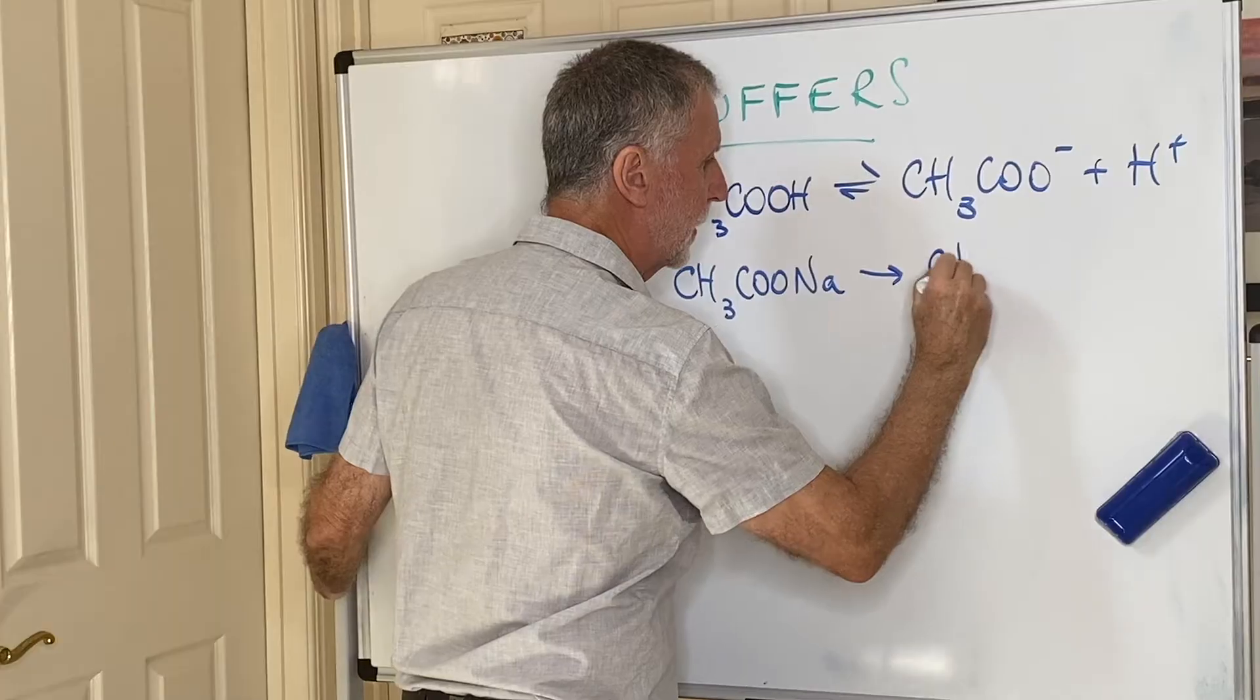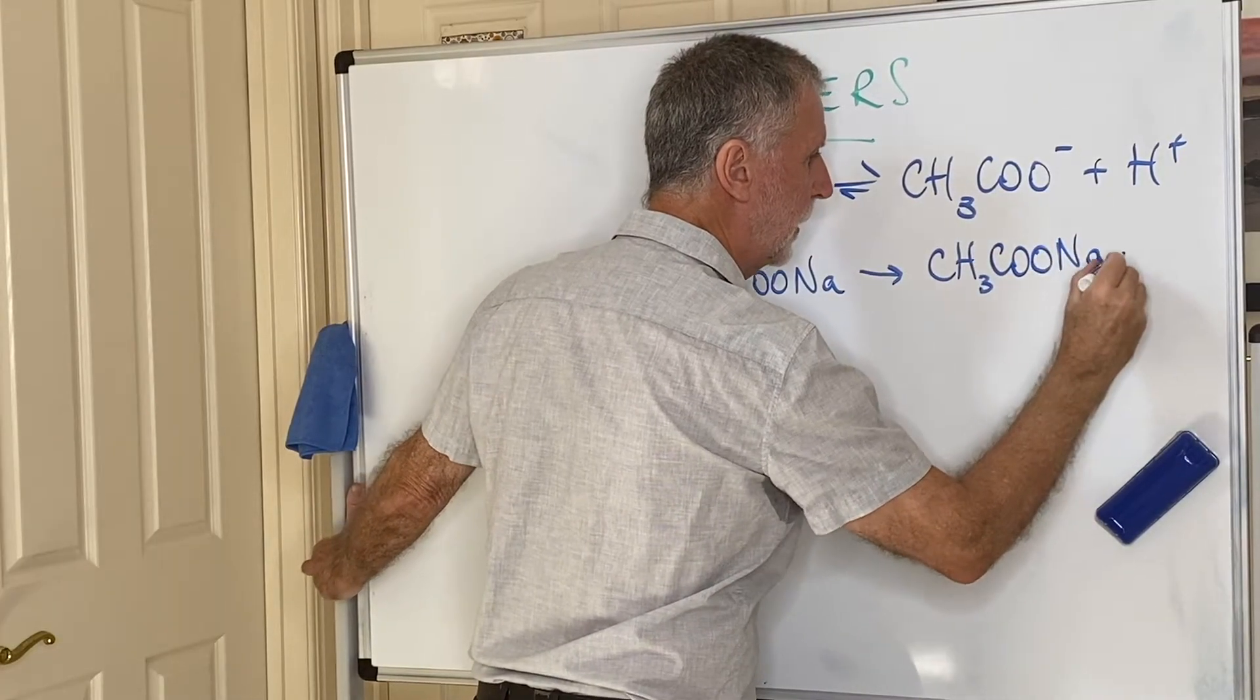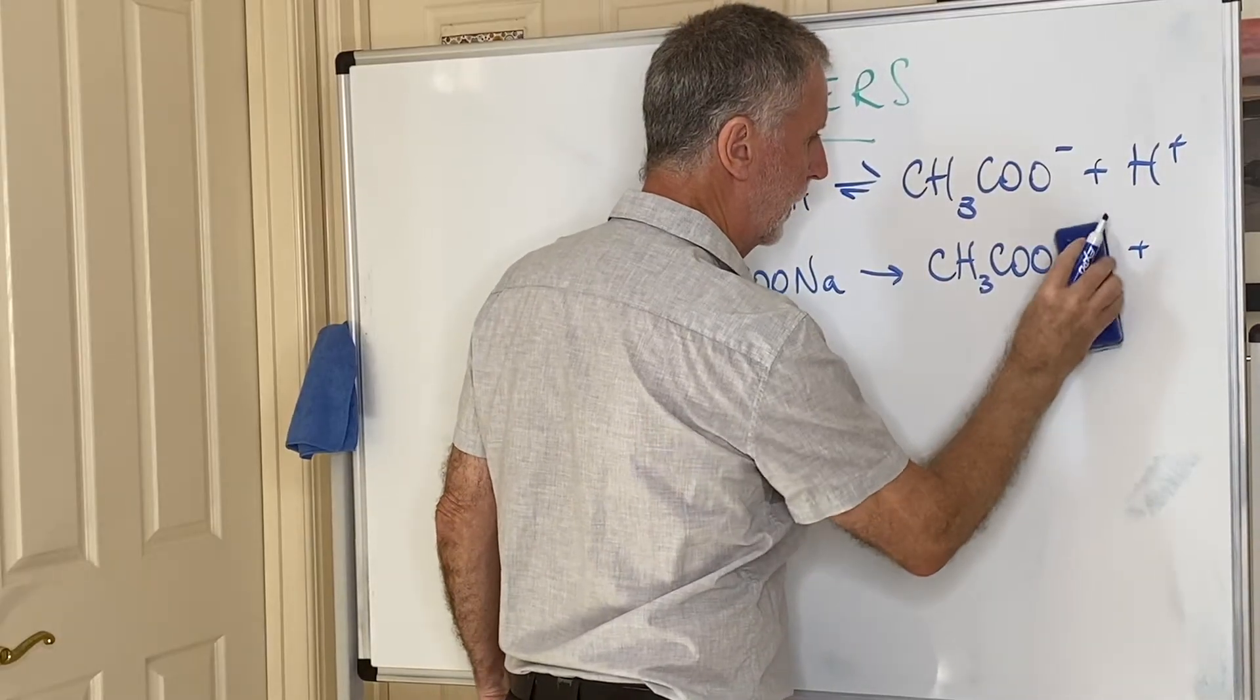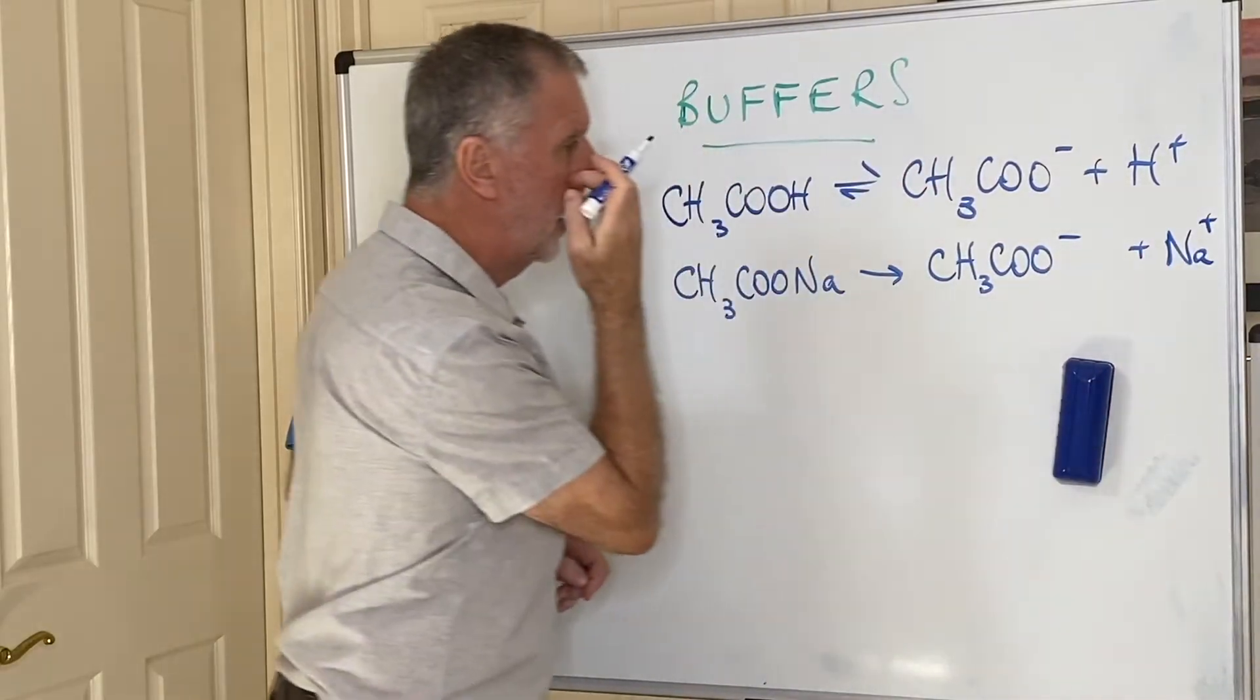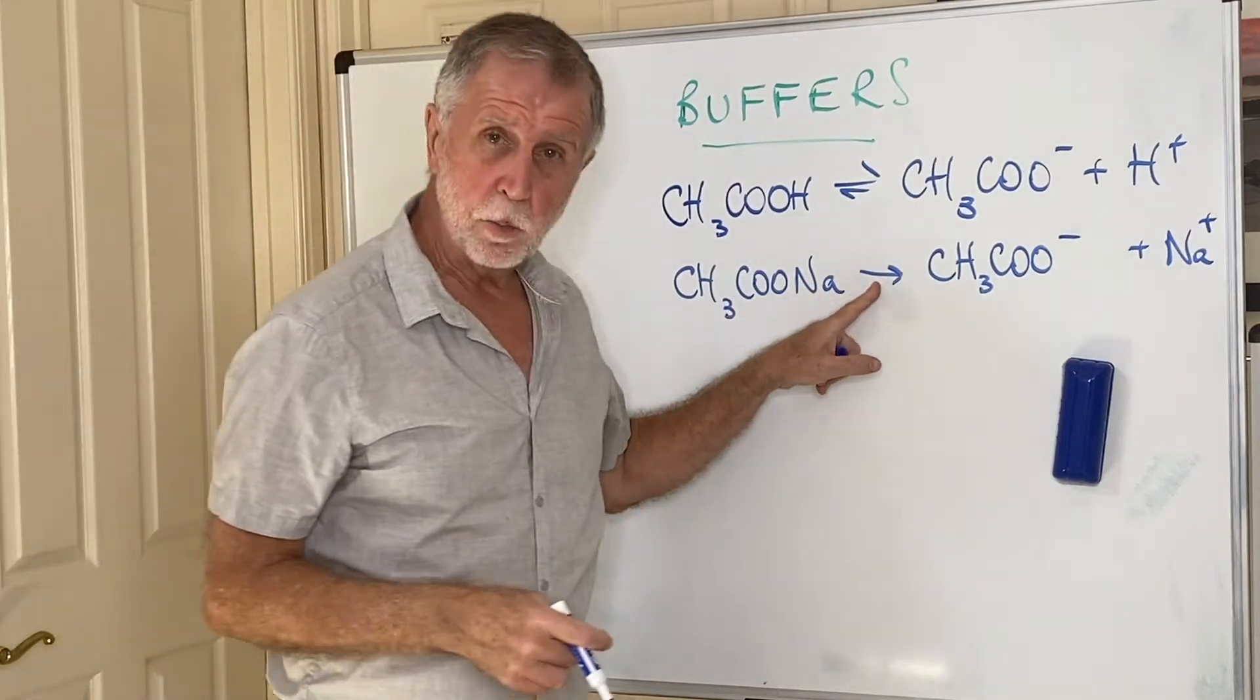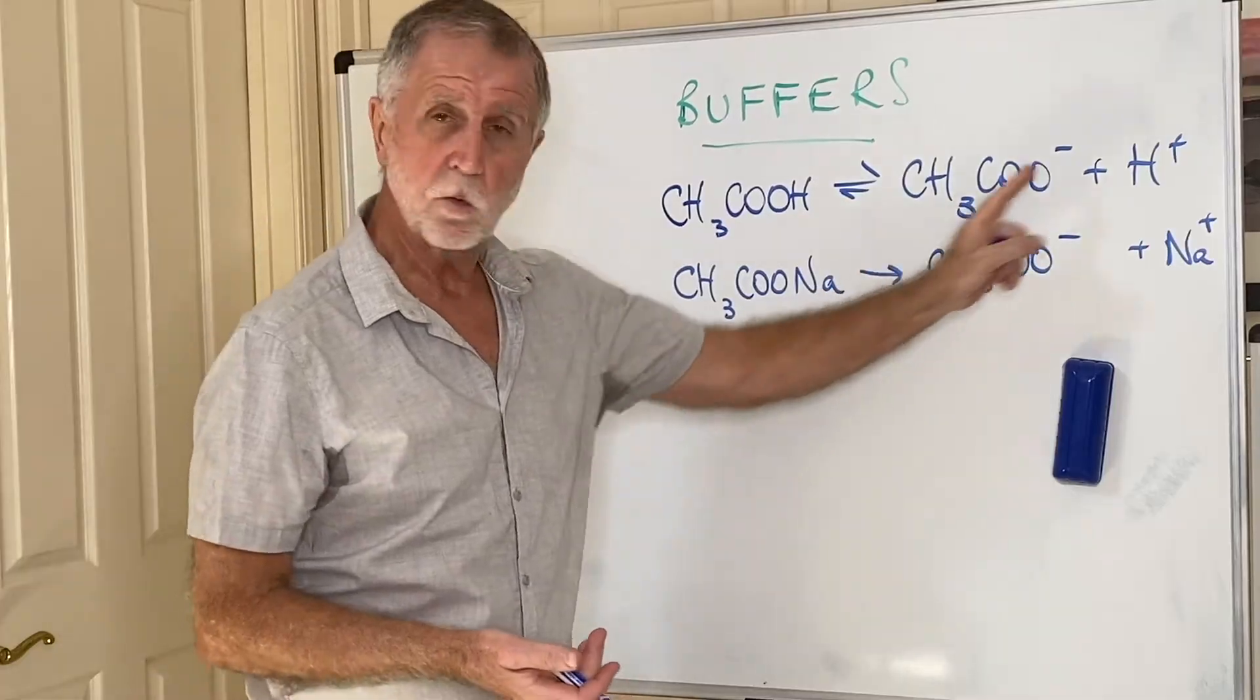You will notice that the arrow points one way only. Ionic salts like this will always ionize completely, dissociate completely when you put them in water. So this arrow points one way only.